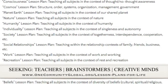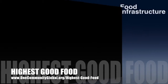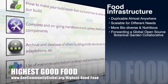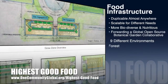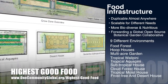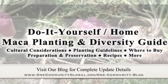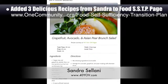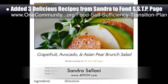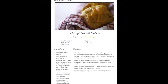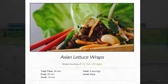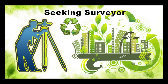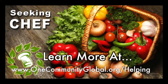One Community's approach to highest good food is duplicable almost anywhere, scalable for different needs, more biodiverse and nutritious, part of forwarding a global open source botanical garden collaborative, and includes nine different free shared and duplicable growing environments. This week the core team finished the final social media imagery and featured our open source maca hub. We also added three additional recipes from Sandra Salani, vegan chef and author of What's Your BQ, to the food self-sufficiency transition plan: Asian brunch salad, broccoli cheese muffins, and Asian lettuce wraps. We are seeking permaculturalists, an irrigation specialist, a surveyor, and a chef.